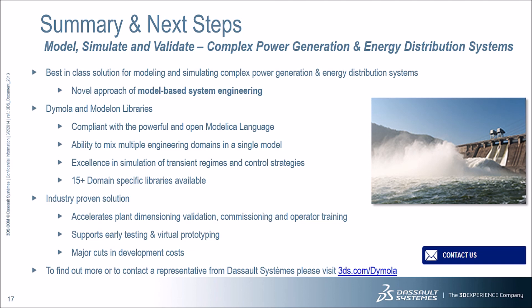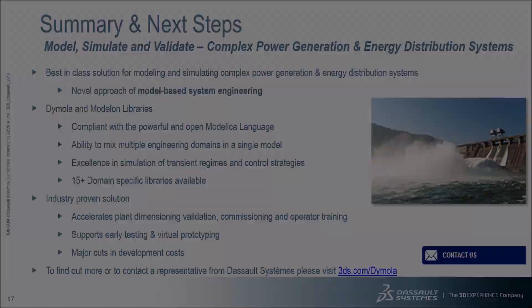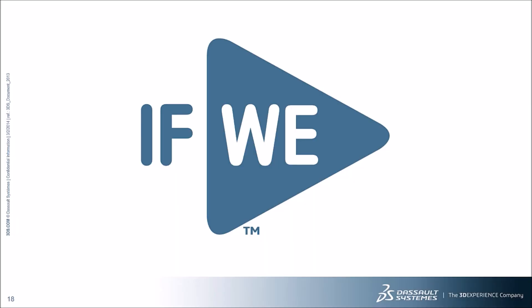With transient simulation capability, these tools offer a powerful platform for system optimization and control strategy development. Daimla offers an extensive set of component libraries, with over 15 domain-specific libraries available. Demonstrated benefits include acceleration of plant dimensioning, commissioning, and operator training. Daimla supports early testing and virtual prototyping and has resulted in major reductions in development and operational costs. Thank you for listening to this webinar. For more information, please visit 3ds.com/daimla.